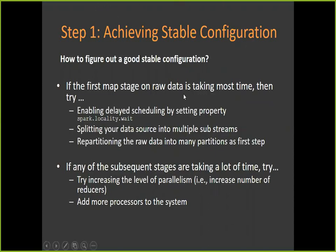For example, if the first map stage on raw data is taking the most time, try enabling delay scheduling by setting the property spark.locality.wait equal to true, splitting your data source into multiple partitions, and pre-partitioning the raw data into many partitions as a first step. The first map stage taking a long time means it does not have enough tasks to read that RDD — so divide it into more partitions to get more tasks.